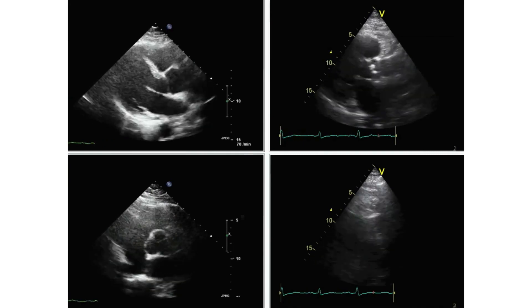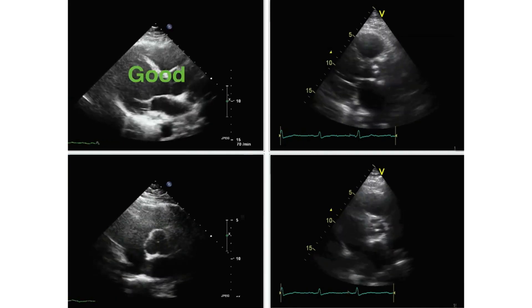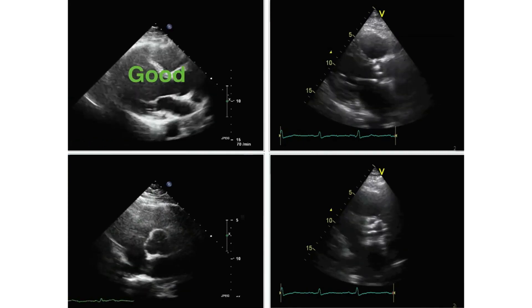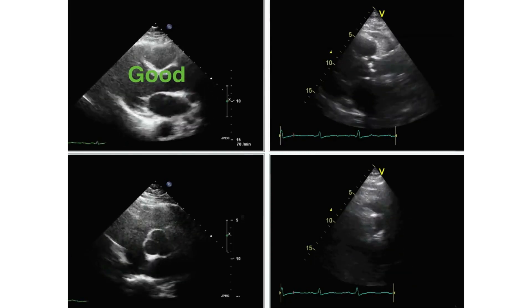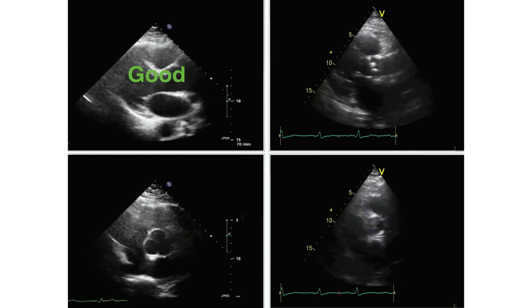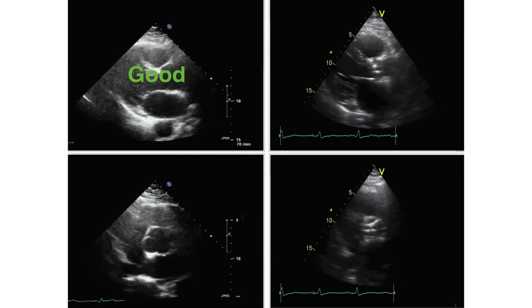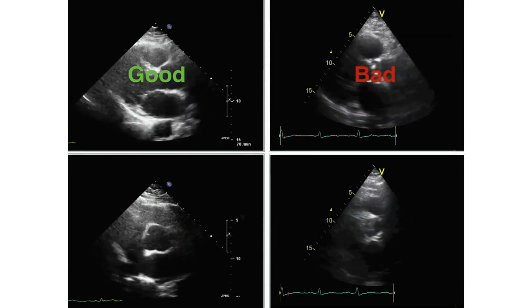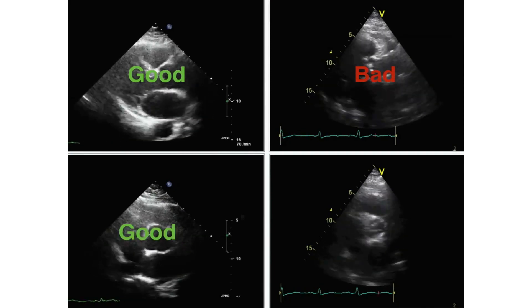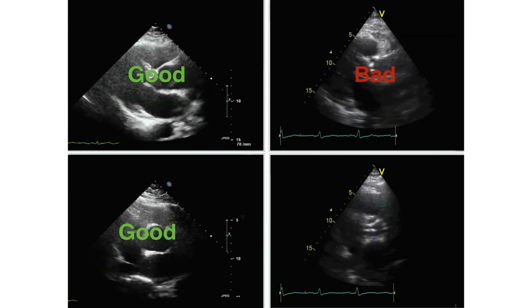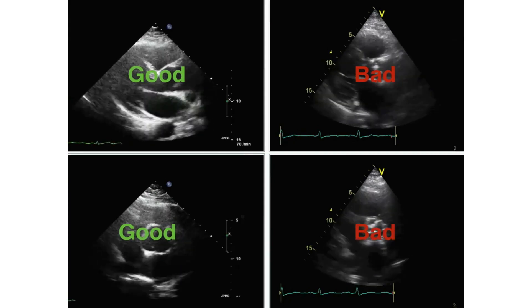The first aortic valve is good. The second aortic valve is really calcified — this cannot be anything apart from bad. The third is good, and the fourth is bad.